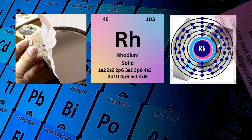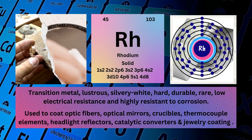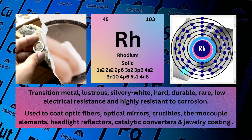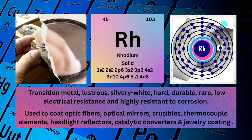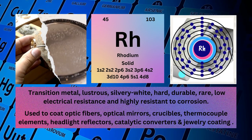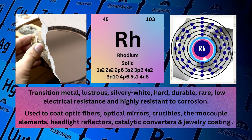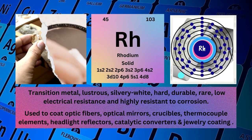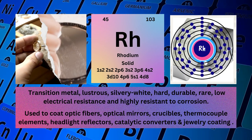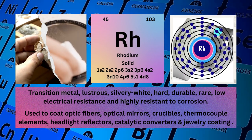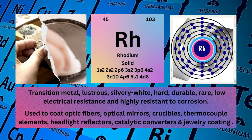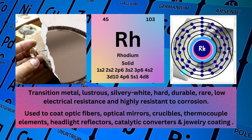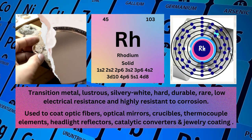Rhodium. Atomic number 45. Mass number 103. Symbol: Rh. State: solid. Electronic configuration: 1s² 2s² 2p⁶ 3s² 3p⁶ 4s² 3d¹⁰ 4p⁶ 5s¹ 4d⁸.